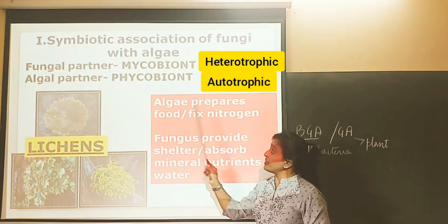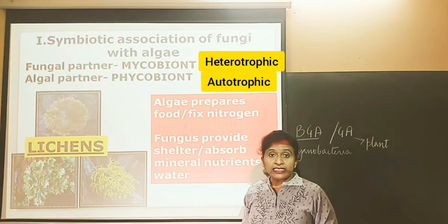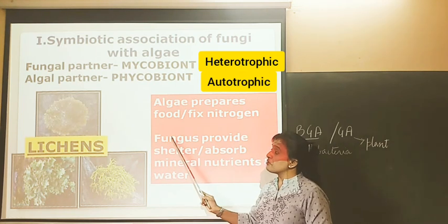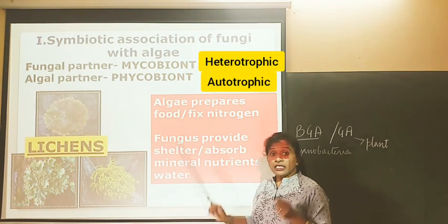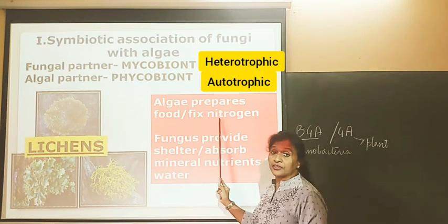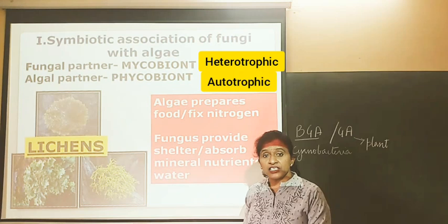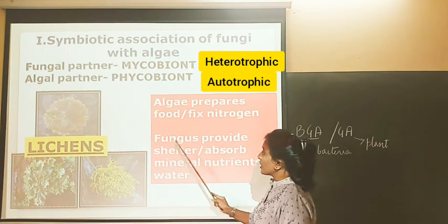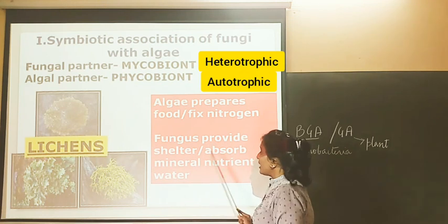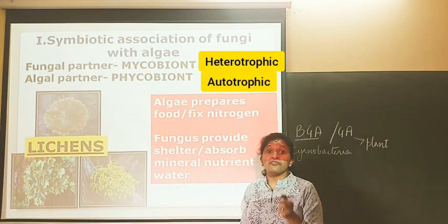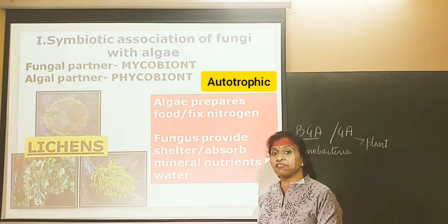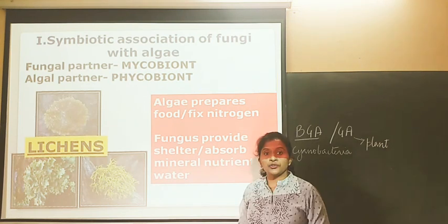Algae will prepare food through photosynthesis and provide organic compounds to the fungus. If it is blue-green algae, it will also fix nitrogen, which is very essential for fungal growth. In return, fungus will provide shelter and will absorb various mineral nutrients along with water, which will be given to algae for photosynthesis.